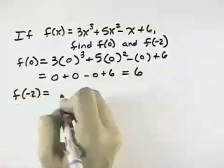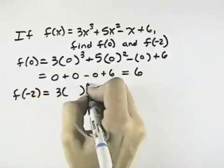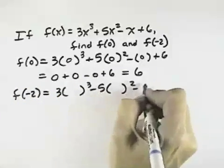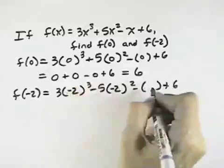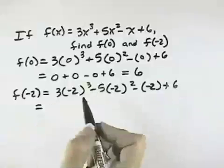We do the same thing for f of negative 2. We write down our function, taking out all the x's but leaving everything else. And where each x was, this time we want to evaluate it when x is negative 2. So we replace it with a negative 2.